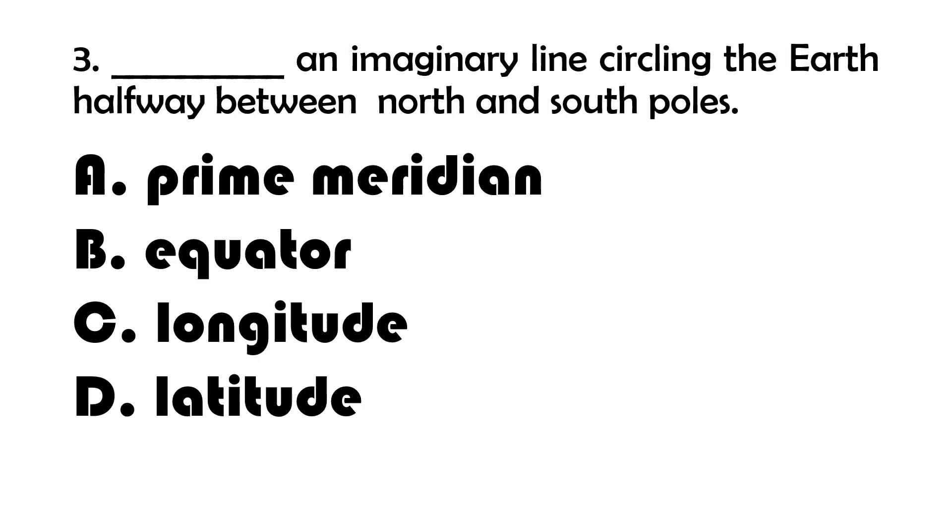Number 3. Blank, an imaginary line circling the Earth halfway between north and south poles. A. Prime Meridian. B. Equator. C. Longitude. And letter D. Latitude.